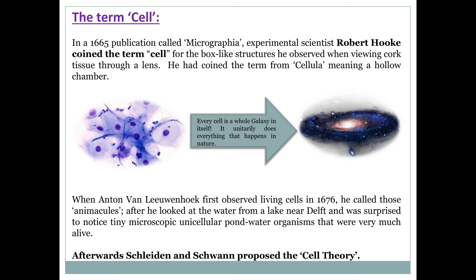A few years later, Anton van Leeuwenhoek observed living cells for the first time in 1676 and called them animalcules. Later on, Schleiden and Schwann proposed the famous cell theory.